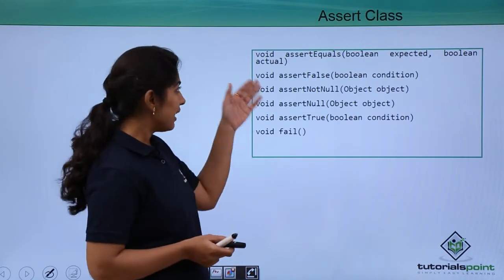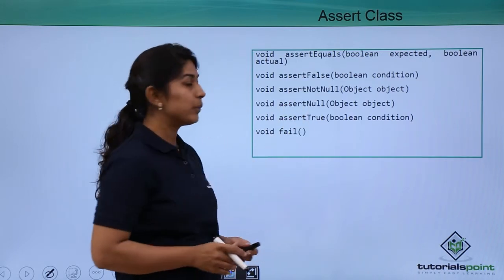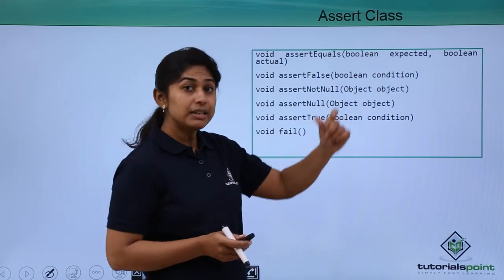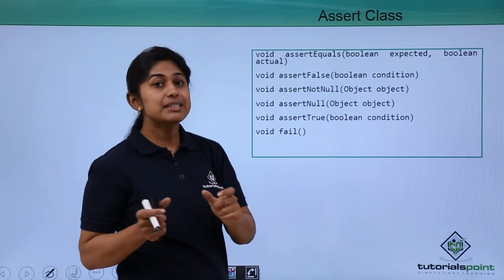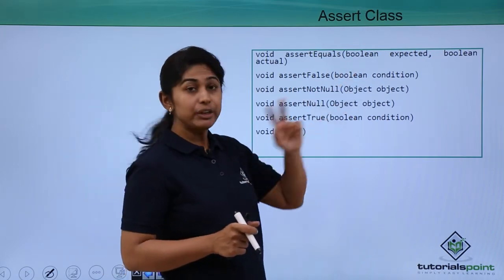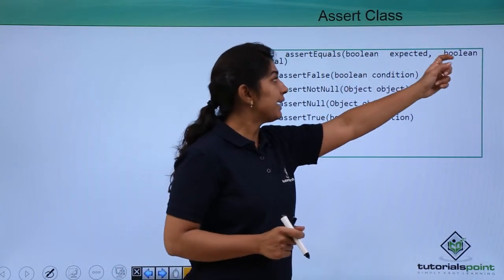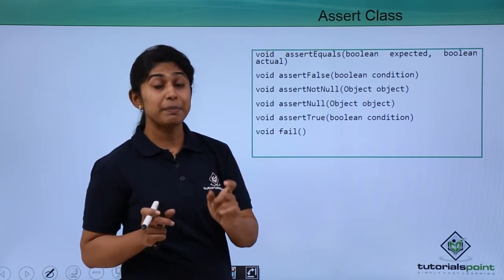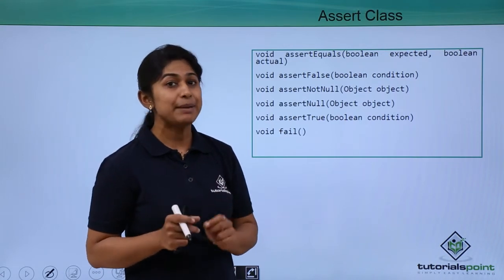The methods are as shown in the presentation. The very first method is assertEquals. The assertEquals method checks your expected result and compares it with the actual result — comparing two data values: your expected output and actual output. Here we have given two arguments of type boolean: boolean expected and boolean actual. You can also pass string arguments or any object, but those two objects should be of the same data type.